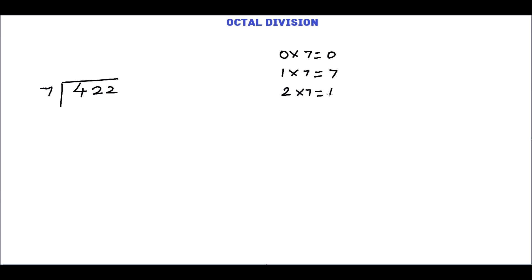2 times 7 is 14 in base 10. We will convert this into octal. Divide this 14 by 8. The quotient is 1 and the remainder is 6. So the equivalent octal number is 16.